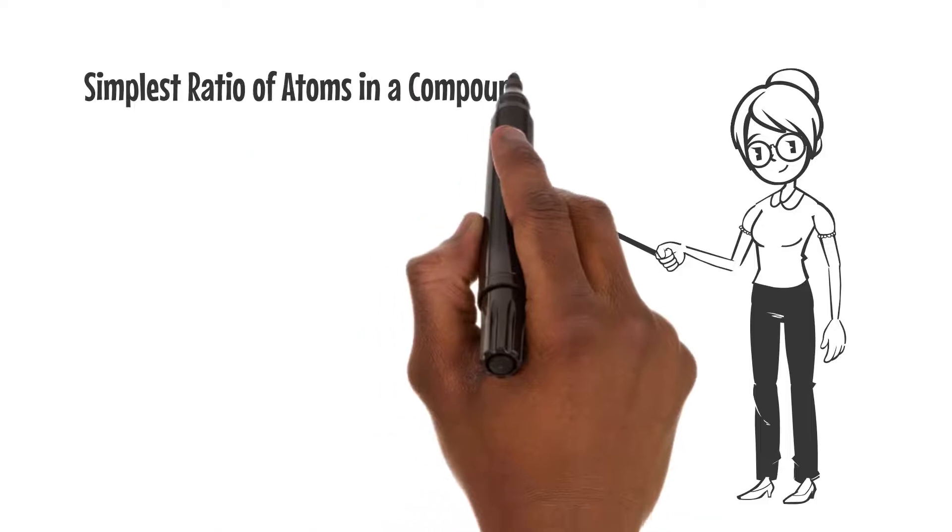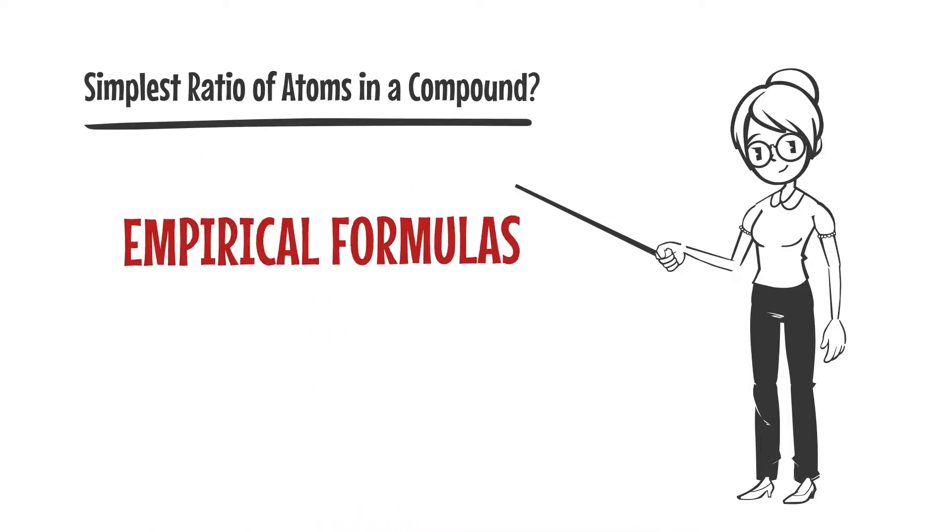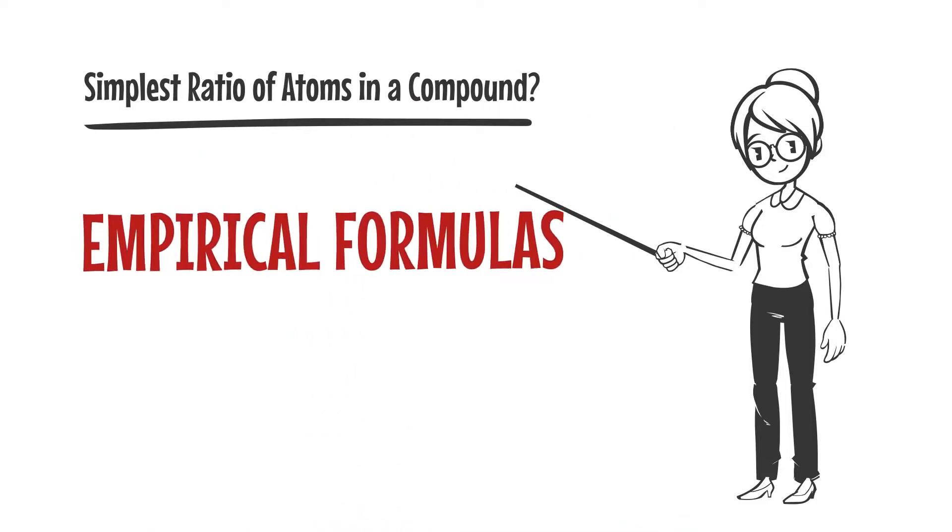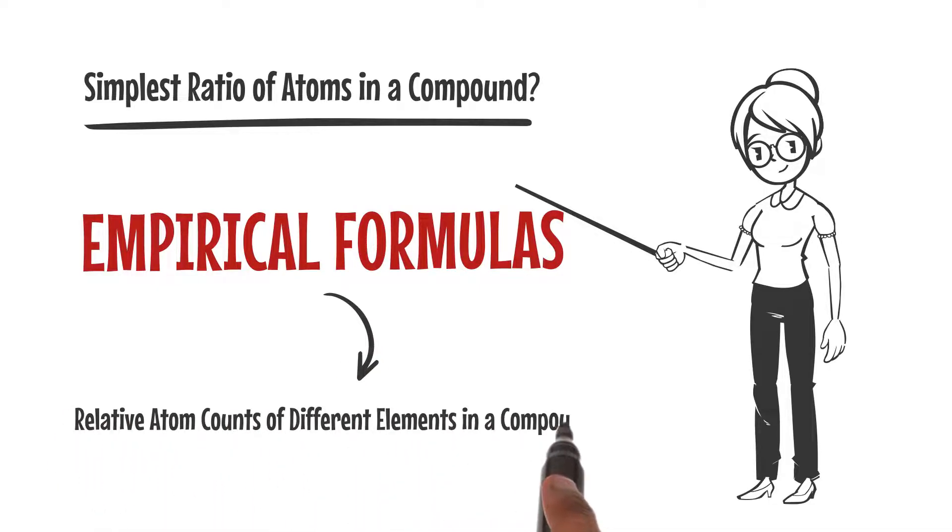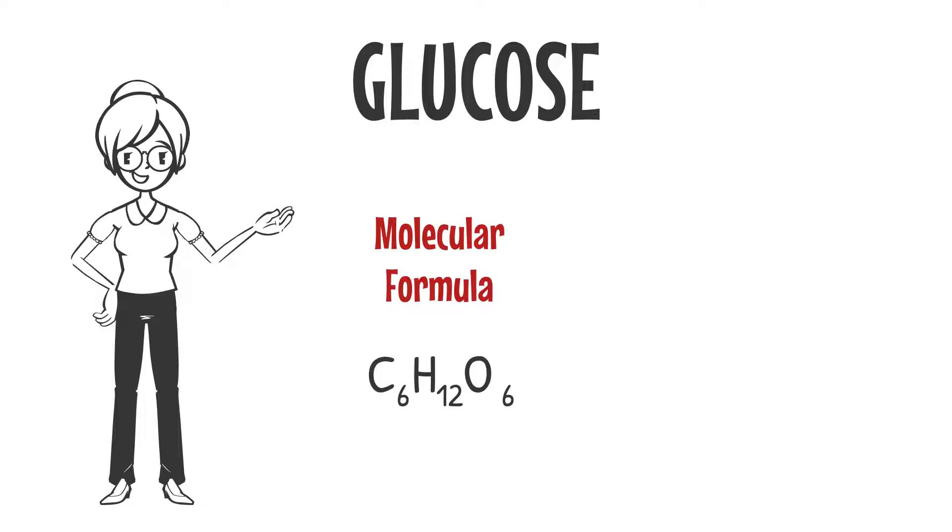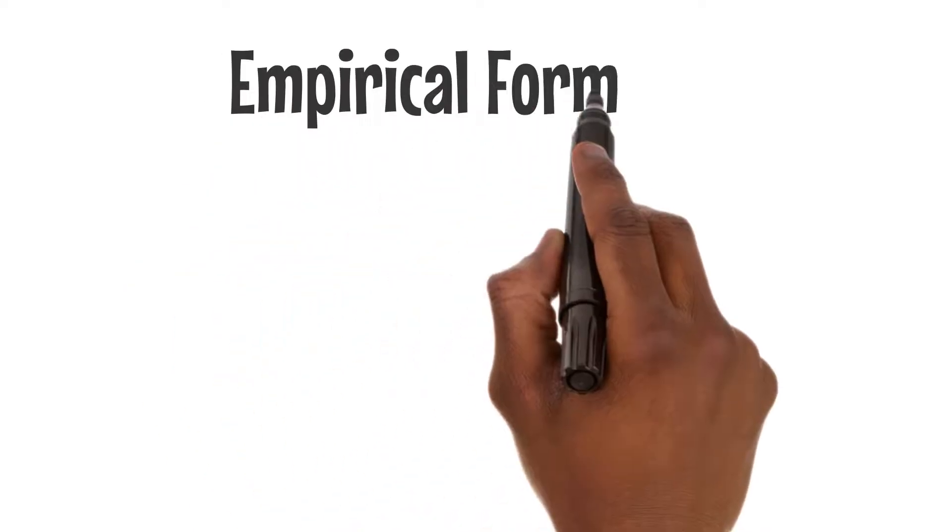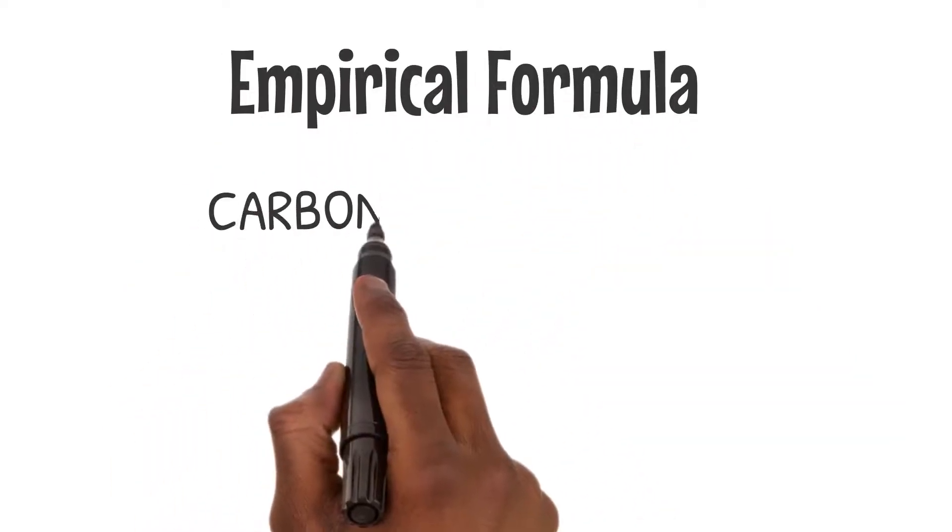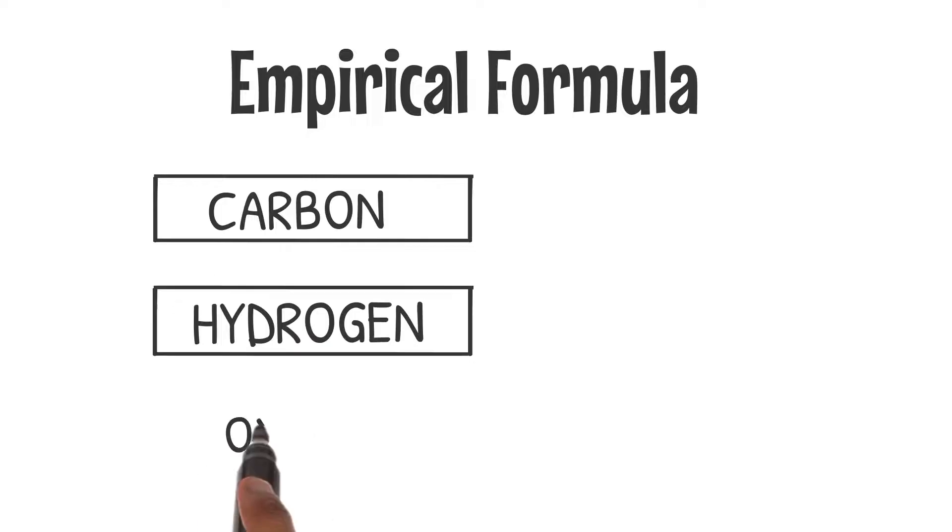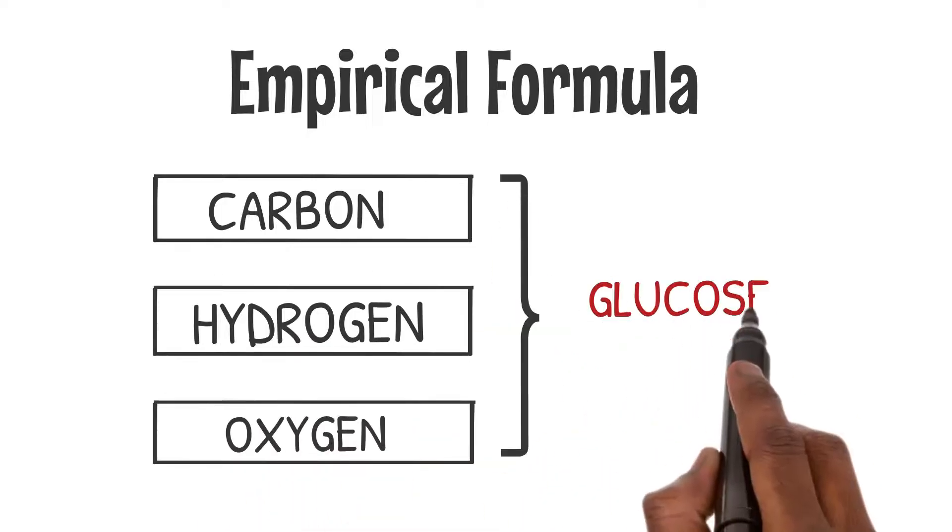But what if we want to know the simplest ratio of atoms in a compound? That's where empirical formulas come in. Empirical formulas give us the relative atom counts of different elements in a compound. Take glucose, for example—its molecular formula is C6H12O6, but its empirical formula is CH2O. The empirical formula gives us the simplest ratio of carbon, hydrogen, and oxygen atoms in glucose.